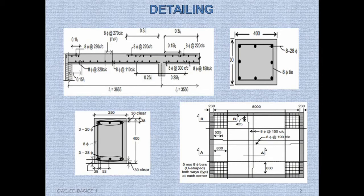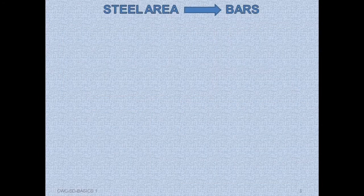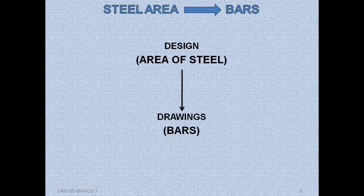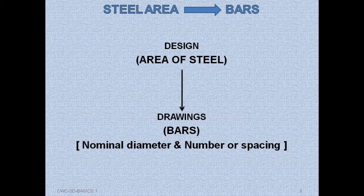While designing, we get the area of steel (Ast). This area of steel is expressed as bars in the drawing — as you have seen, in some drawings diameter and numbers are mentioned, and in others diameter and spacing are used. The area of steel obtained during design is converted and expressed in terms of bars of a specified nominal diameter and number or spacing.